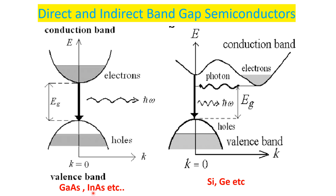Examples of direct band semiconductors are gallium arsenide and indium arsenide — these are compound semiconductors. In contrast, elemental semiconductors like silicon and germanium have the top of the valence band and the bottom of the conduction band at different K values, so there is a shift.